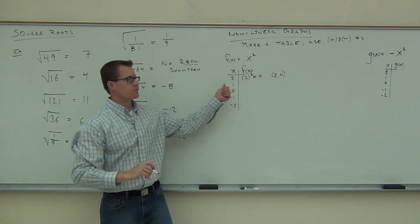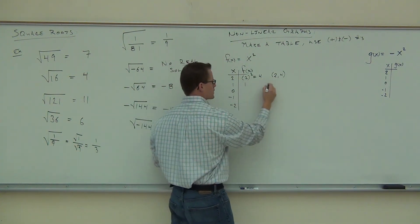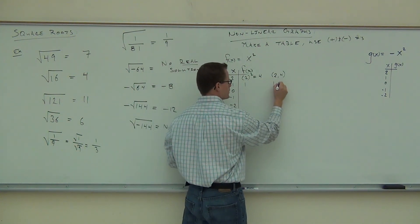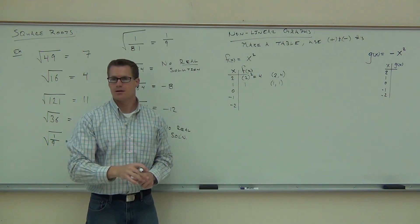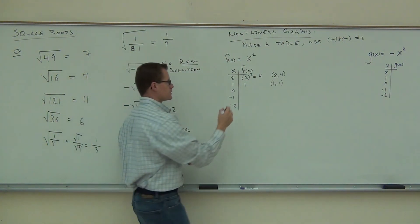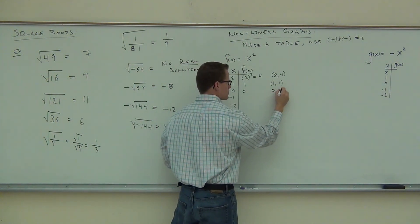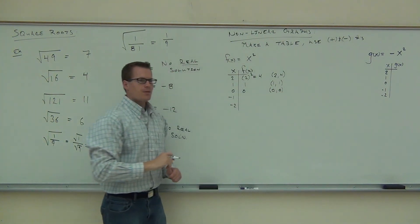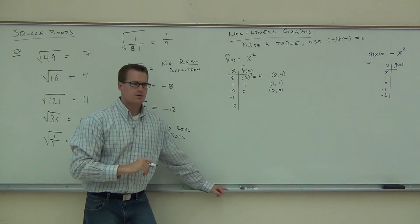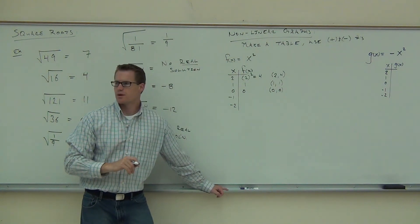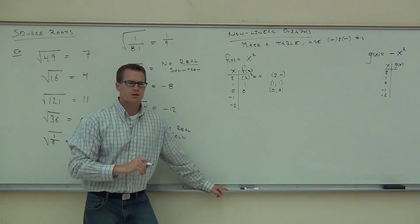Next: plug in one — one squared is one, so we have (1, 1). Plug in zero — zero squared is still zero, so we have (0, 0). Now negative one: negative one squared. How much is negative one squared going to be? One — good.